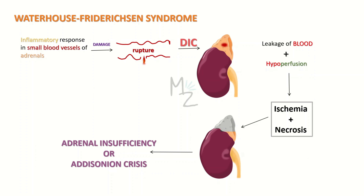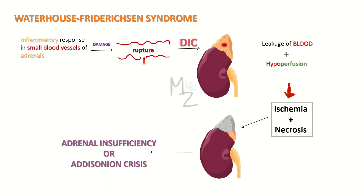Waterhouse-Friderichsen syndrome is an inflammatory response in the small blood vessels of the adrenal glands, resulting in endothelial damage and rupture of blood vessels. Due to DIC, clotting is impaired, leading to leakage of blood into the interstitial space of the adrenal glands. This, along with generalized hypoperfusion, leads to ischemia and necrosis of the gland, ultimately causing adrenal insufficiency — also known as Addisonian crisis.